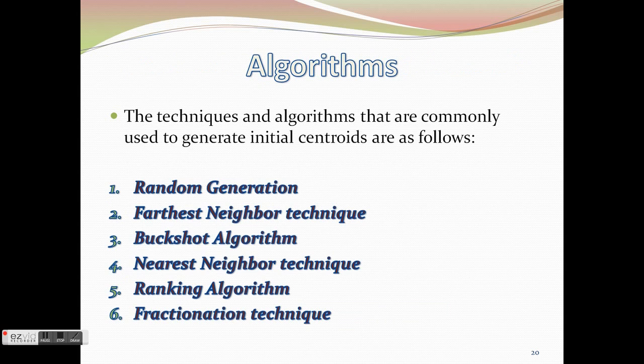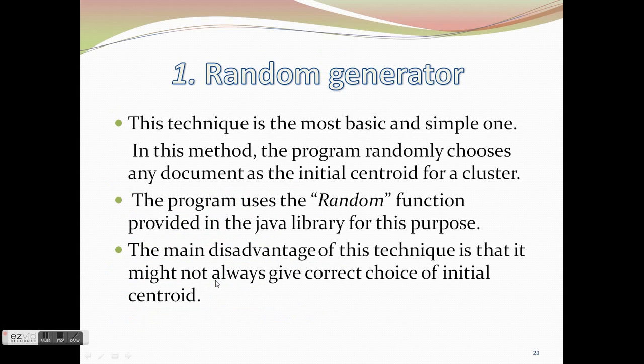The initial centroids are determined by using one of these six techniques in our project instead of just using simple random generation. Farthest neighbor technique, buckshot algorithm, nearest neighbor technique, ranking algorithm, and fractionation technique have been proposed. The random generator simply picks random documents as the initial centroids.